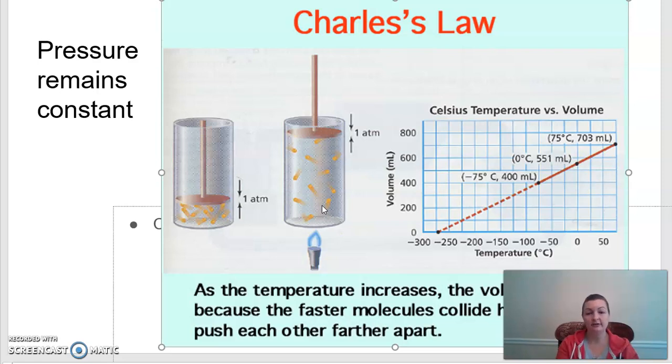It does say as temperature increases, the volume increases. Because the faster molecules collide, they collide harder, they push on each other, and it ends up creating a larger volume of space. The graph is a linear graph. So we have volume, we have temperature. Notice we're not putting pressure on this graph because pressure remains constant. We have no need for it in a graph form. And you can see as one increases, the other also will increase.